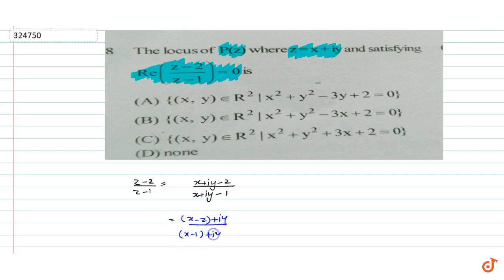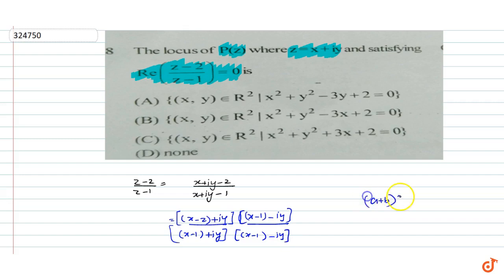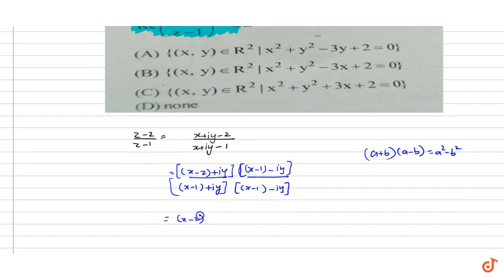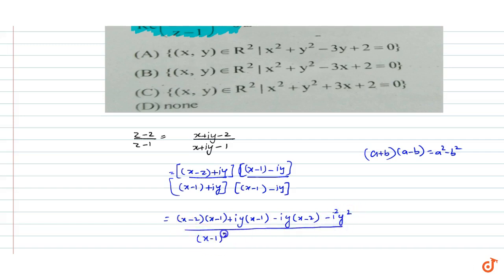Now we need to rationalize this. We multiply by (x - 1 - iy)/(x - 1 - iy). Using the identity (a + b)(a - b) = a² - b², the numerator becomes (x - 2)(x - 1) + i·y(x - 1) - i·y(x - 2) - i²·y², and the denominator becomes (x - 1)² - i²·y². Since i = √(-1), i² = -1.